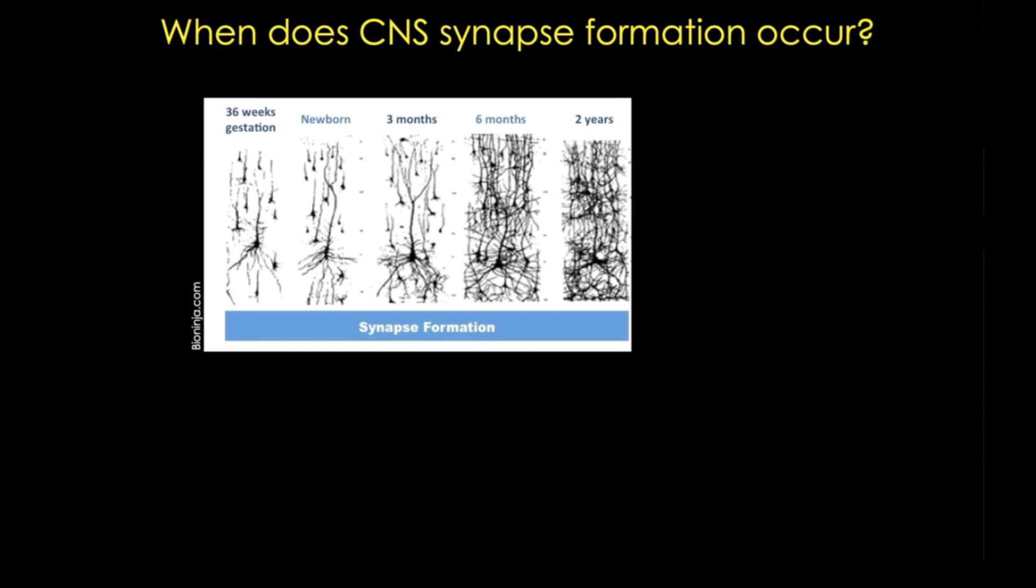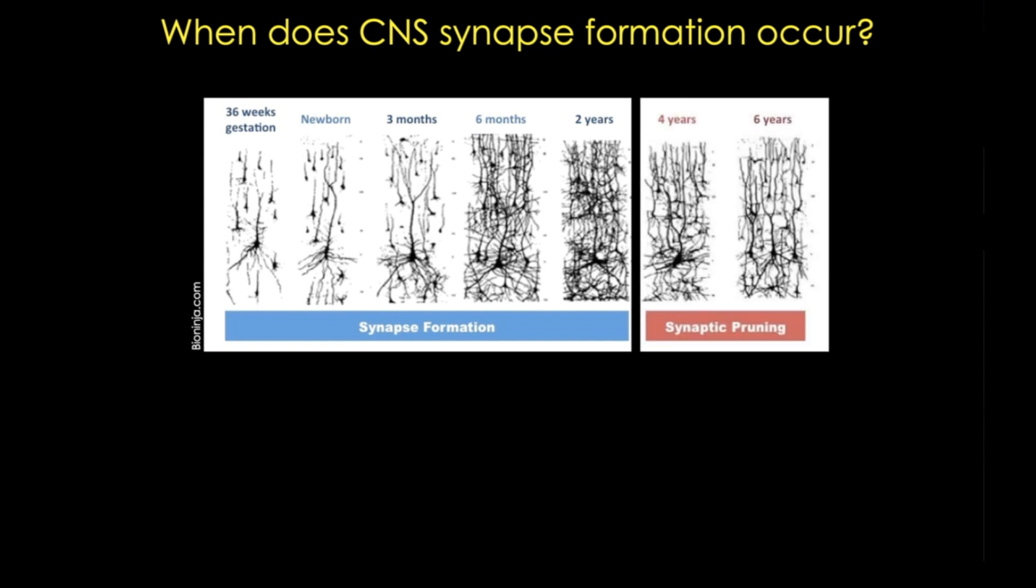Other synapses are not used as often, and so these connections are weakened and eventually eliminated. And we call this synaptic pruning, and it can actually take a long time, and different parts of the brain will have variation in the timing and extent of their pruning.